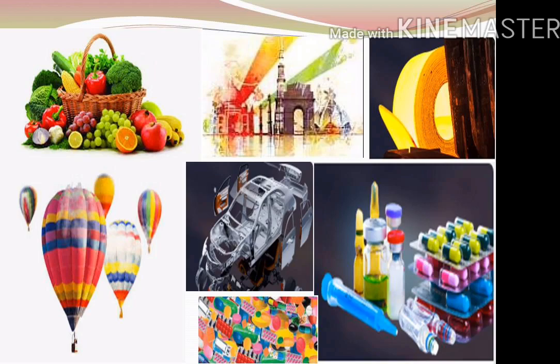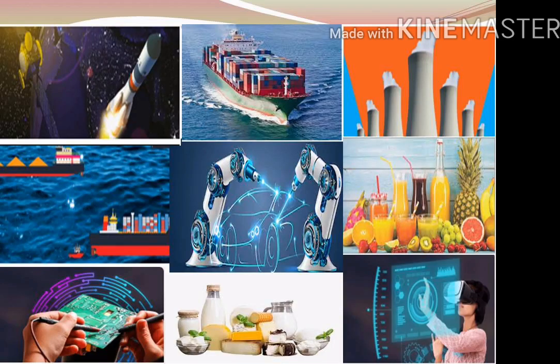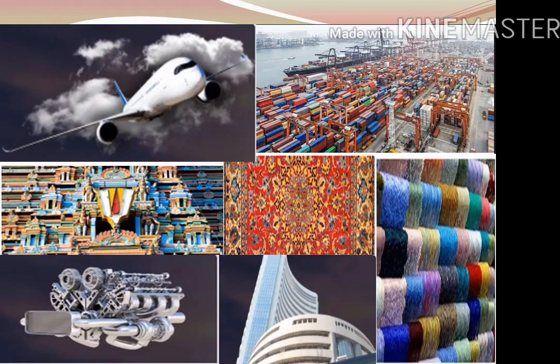In simple terms, we can segregate our economy into various sectors, which start with A for agriculture and end with W for the wellness sector. I will share information about government announcements, policy, foreign investment, macroeconomic indicators, and business trends.